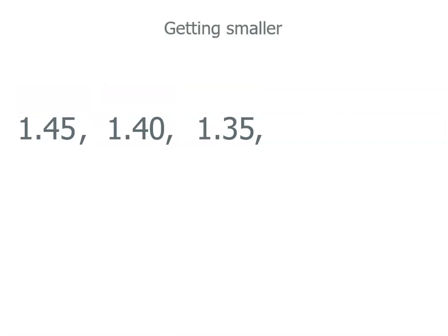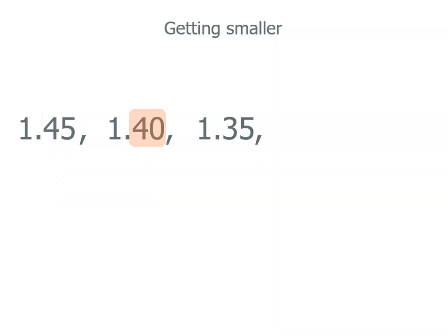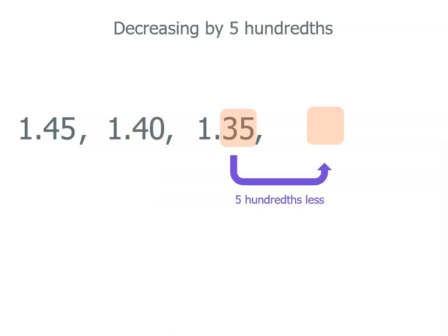Now we need to spot the pattern. They are getting smaller — we've got 1 and 45 hundredths, then 1 and 40 hundredths, so we've got 5 hundredths less. Let's see if that's true next time: we went from 1 and 40 hundredths, and if we have 5 hundredths less, we'd get 1 and 35 hundredths, which we do. So our pattern is subtracting 5 hundredths, meaning we'll have 1 and 30 hundredths next.